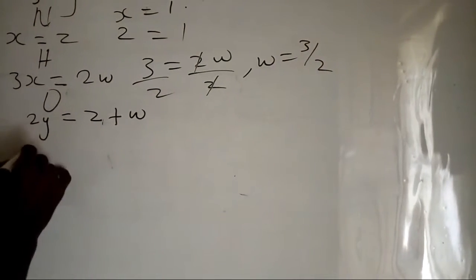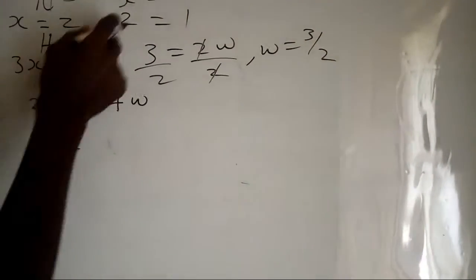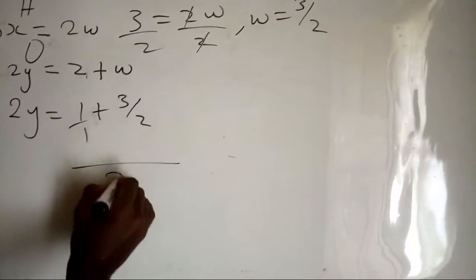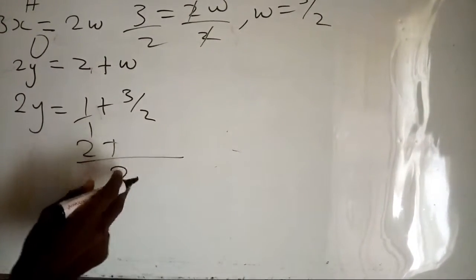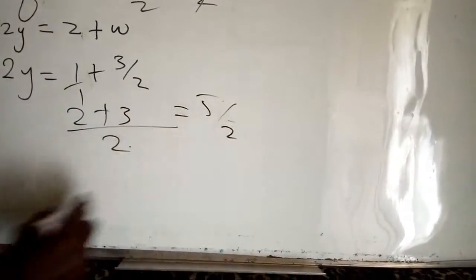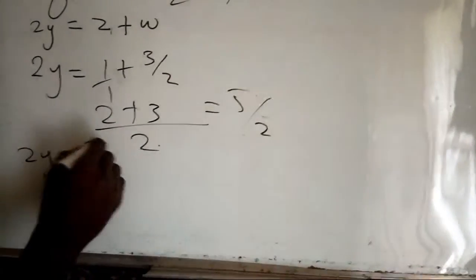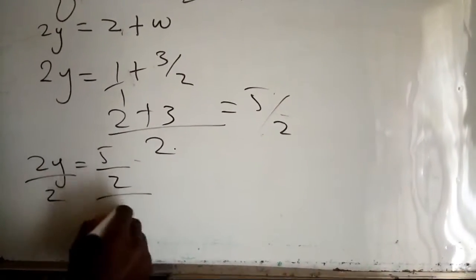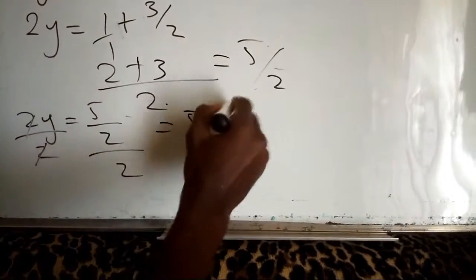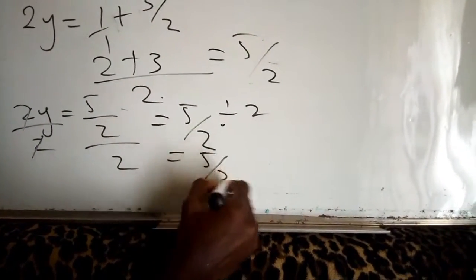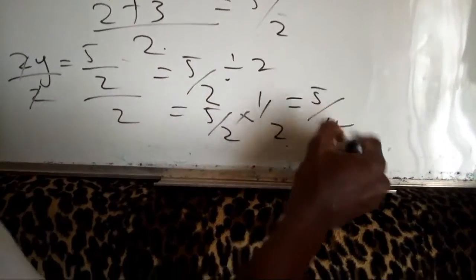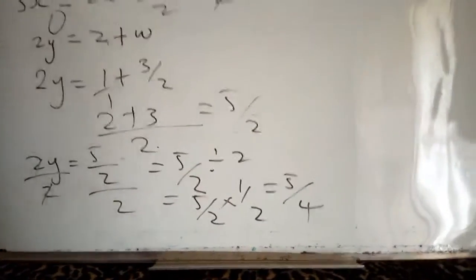For oxygen: 2y equals z plus w, which is 1 plus 3/2. Finding the LCM, which is two: 2/2 plus 3/2 equals 5/2. So 2y equals 5/2. Divide both sides by two: y equals 5/2 divided by 2, which is 5/2 times 1/2, giving y equals five over four.